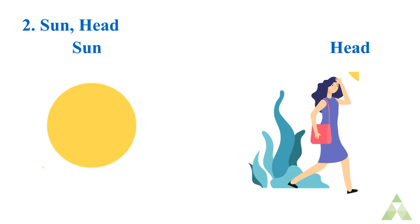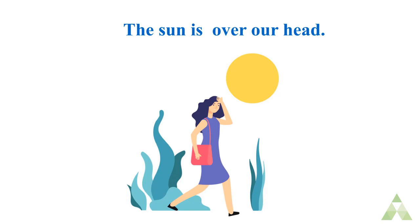Write a sentence using 'son' and 'head' in the same sentence. The answer is: the son is over our head. Notice the relationship between son and head — the word which creates that relationship is 'over', meaning where is the son? The son is over our head.